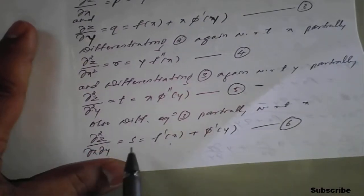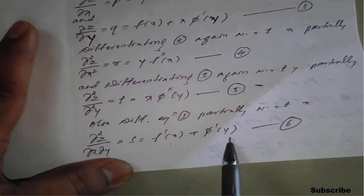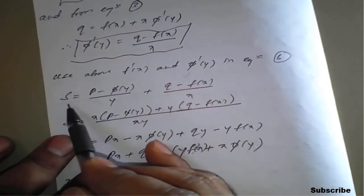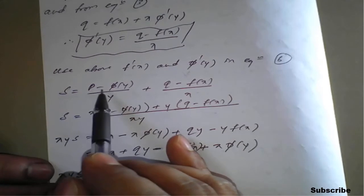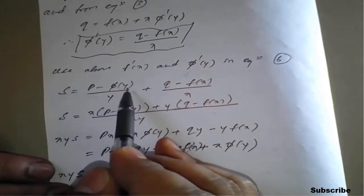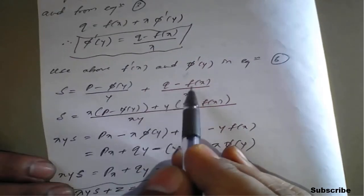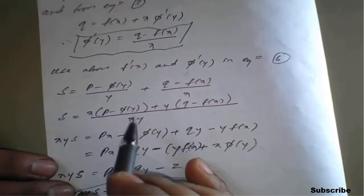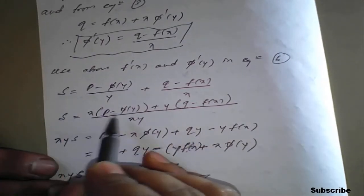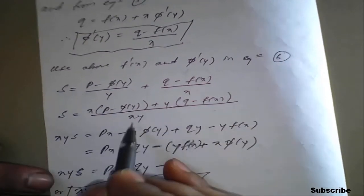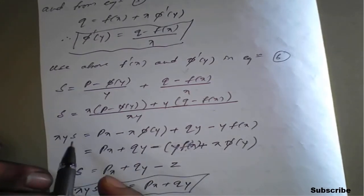Equation 6 is s equals f dash of x plus phi dash of y. Substituting the values, s equals the quantity p minus phi of y divided by y, plus the quantity q minus f of x divided by x. Taking the LCM as xy and cross-multiplying, xy times s equals x times the quantity p minus phi of y, plus y times the quantity q minus f of x.